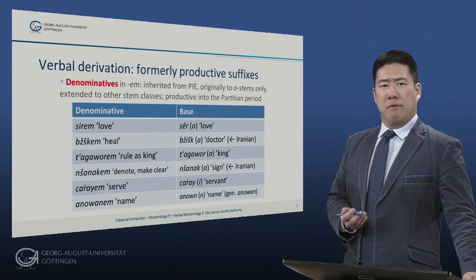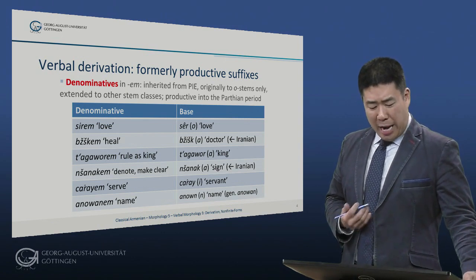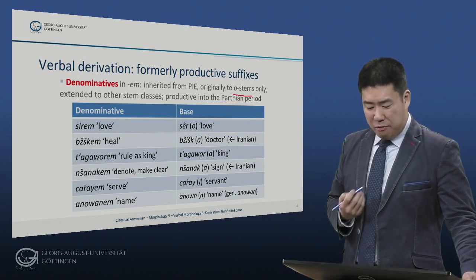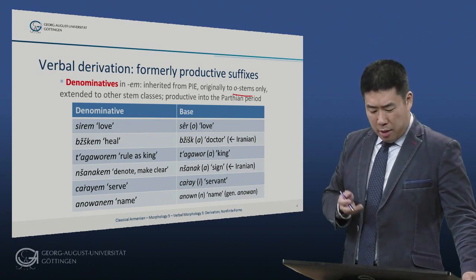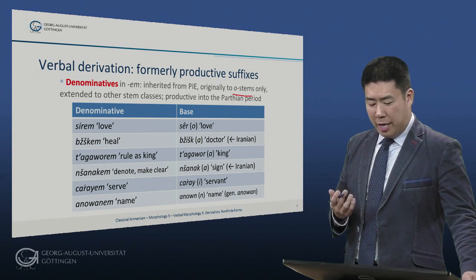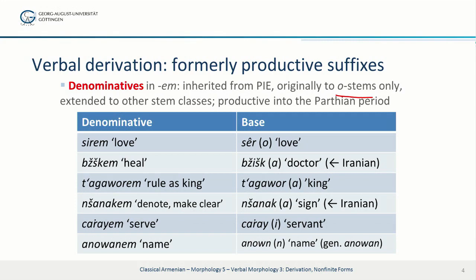Let's begin with the formerly productive suffixes. Denominatives in -m as a type are inherited from Proto-Indo-European. Originally they were proper to O-stems only, but were extended to other stem classes. This must have remained productive into the Parthian period. We have examples such as: ser 'love' → sirem 'I love'; tagawar 'king' → tagawarem 'I rule as king'; tsarai 'servant' → tsarayem 'I serve'; and anun 'name' (genitive anuan) → anuanem 'I name something.'